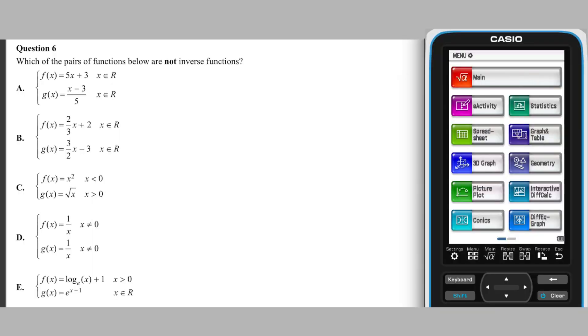Question 6 asks which of the five options are not pairs of inverse functions. Looking first at the rules for each pair, it seems like all the rules are those of inverse functions. This can be seen by transposing f and x and rearranging.